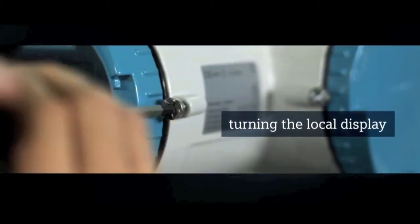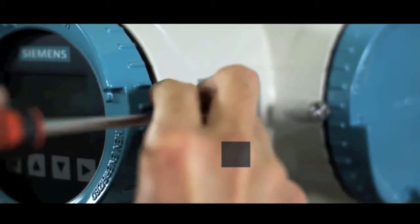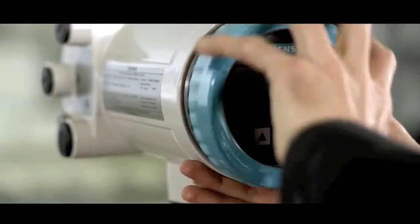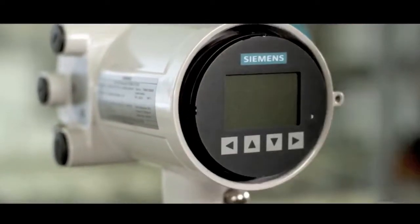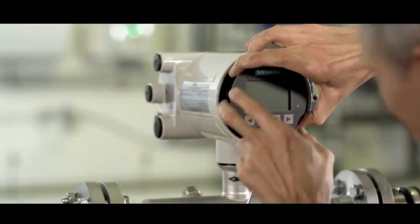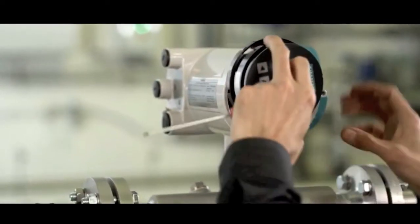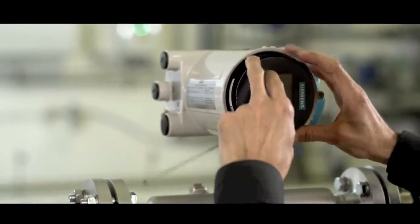The display of the transmitter can be rotated in increments of 30 degrees. Loosen the lid lock screw and remove the display cover. Carefully pull out the display, rotate it to the desired position, and gently push it back into place.